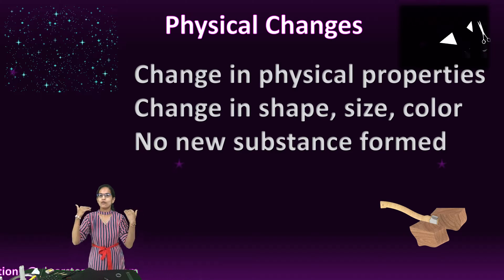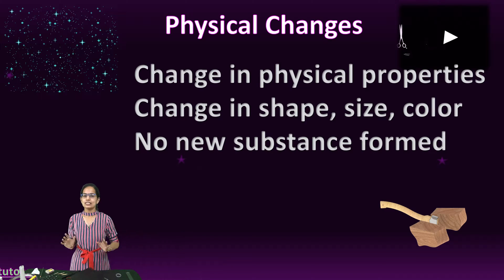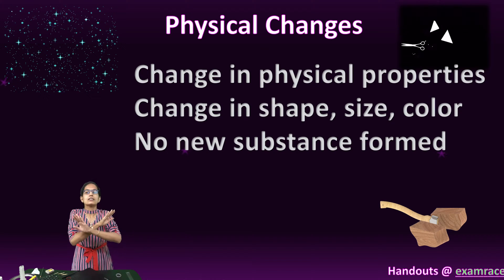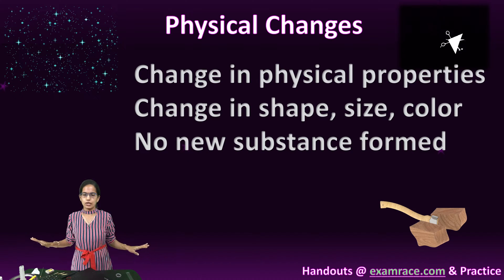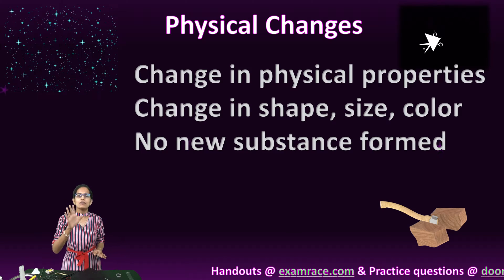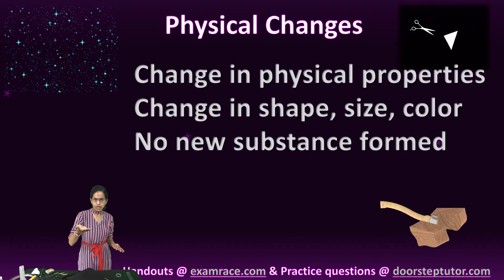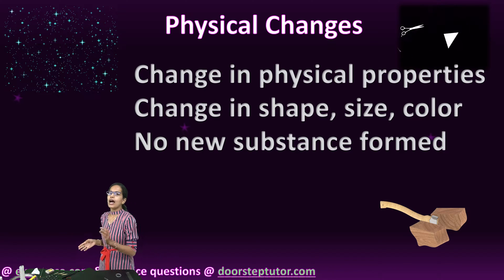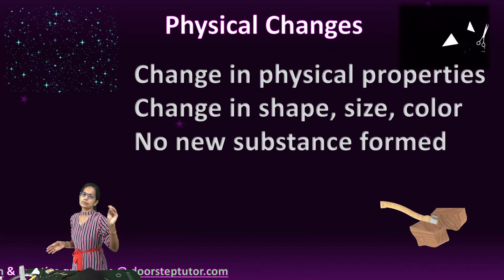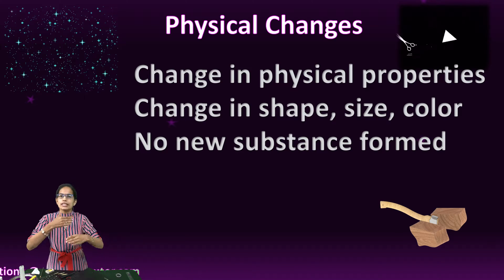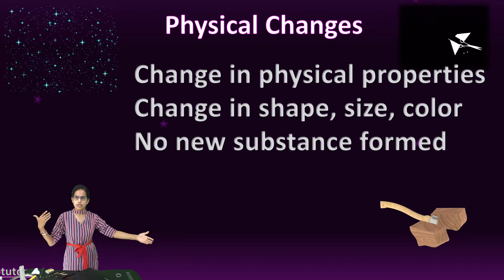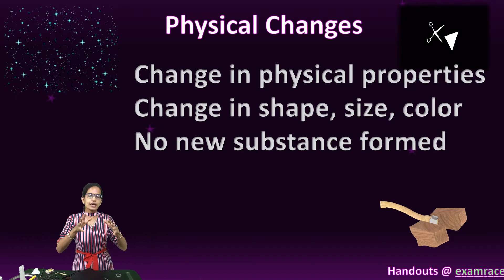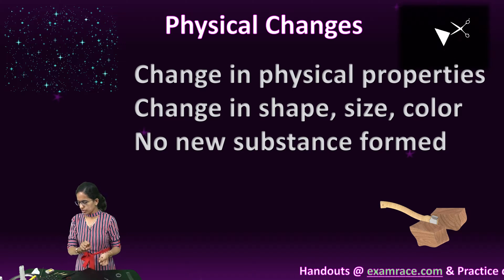Physical changes are those changes in which the physical property changes but the chemical property remains unaltered. That means there can be a change in shape, a change in size, a change in color, and usually no new substance is formed. There can be changes in the state of matter, separation of mixtures, and physical deformations.